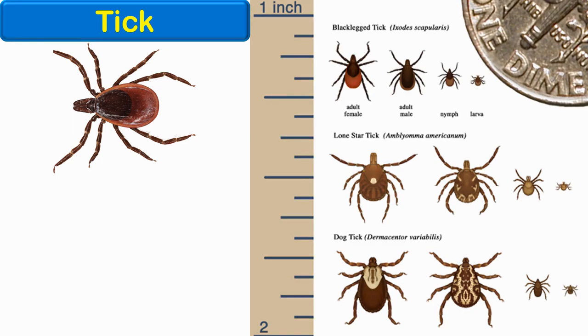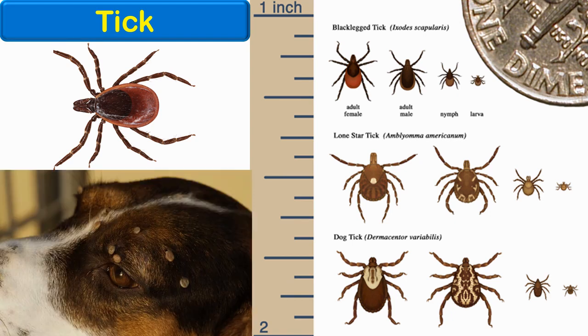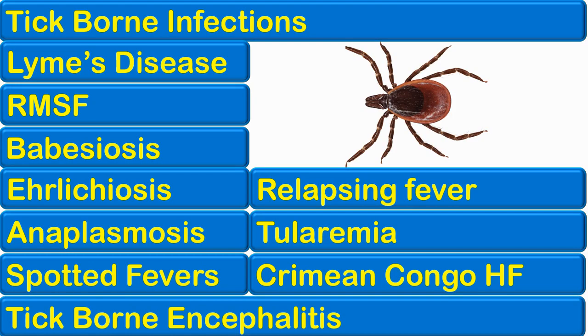The next vector is a tick. Most ticks have to pass through three life stages: the larva, nymph, and adult. They need a blood meal to transform from one life stage to the next. They may acquire the infection during one life stage and transmit it during a subsequent blood meal to another human. Ticks are found commonly in both pet and wild animals, which can act as reservoirs of these infections. This slide shows some of the infections transmitted by ticks.